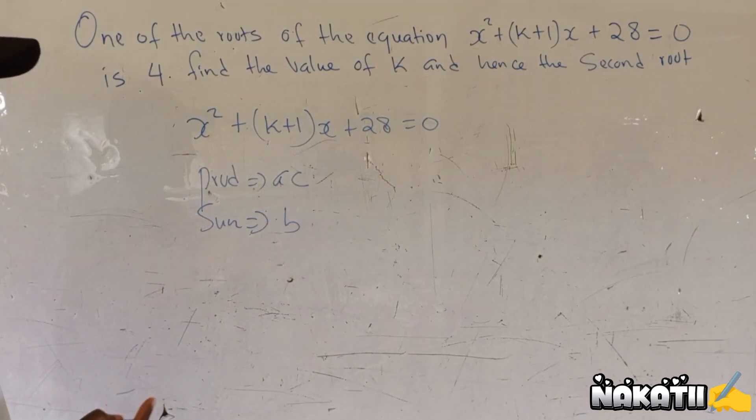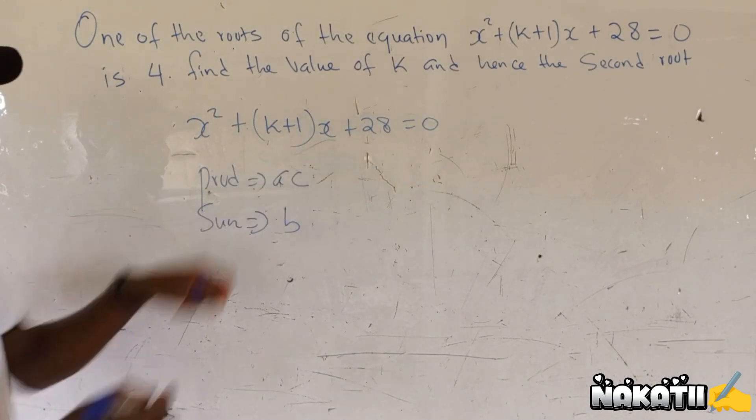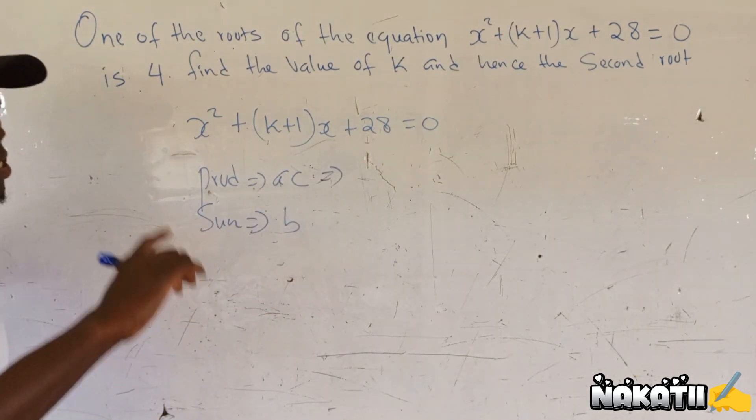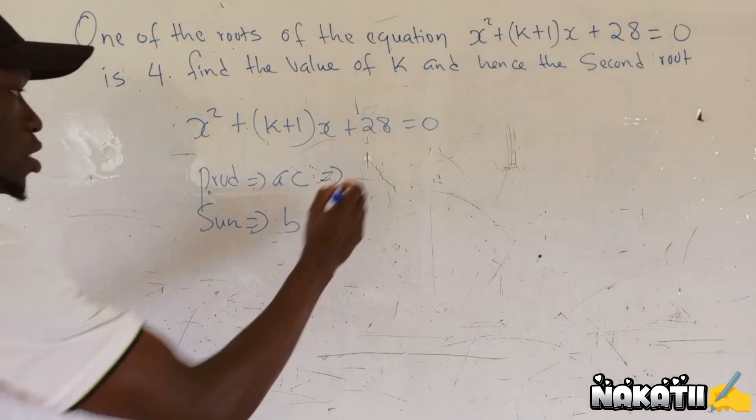Product is AC and sum is B. Now what is A, what is C, and what is B? In this equation here, our A is the coefficient of x squared, which is 1, and our C is 28. Therefore our product will be the product of A times C, which is 1 times 28, which is 28.